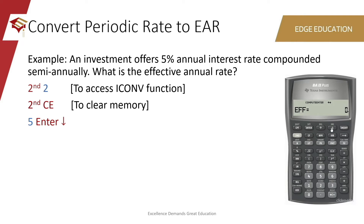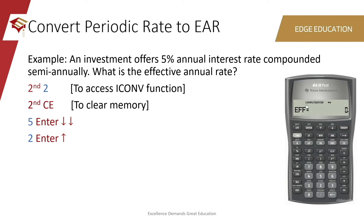Then press the down arrow key. You'll be able to see EFF, which stands for the effective annual rate. We are not yet ready to calculate this because we need to enter the compounding frequency into our calculator. So once again, press the down arrow key, and you will notice C/Y — this is the compounding frequency per year. Since the interest rate 5% is compounded semi-annually, and there are two semi-periods within a year, type 2 and press the enter button on top. Now press the up arrow key to go back to EFF, and press CPT, which stands for compute. You should be able to see 5.0625% as the effective annual rate.